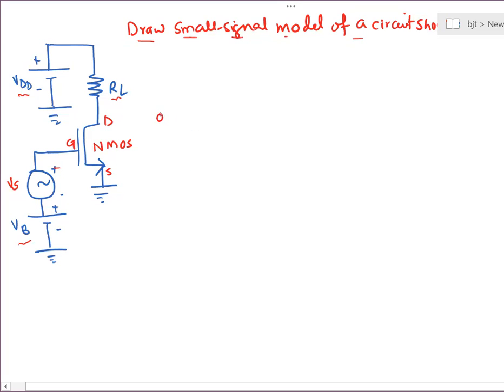Whenever you see an NMOS transistor, we can draw the equivalent circuit of this transistor as shown. This will be your gate terminal at the input side, and on the output side you have a drain terminal and then you have source terminal which can be drawn like this. Now at the input side you have this voltage Vgs that can be drawn like this. On the output side, the drain current flows from drain to source.